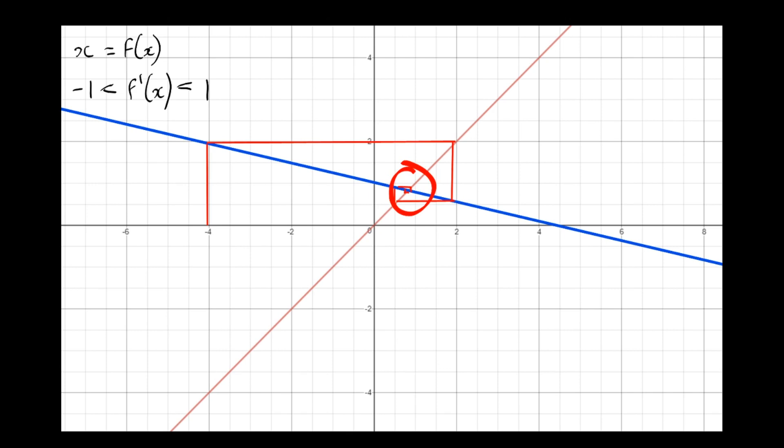So we've just shown a couple of examples where the gradient of f(x) is between minus 1 and 1, and convergence does occur.